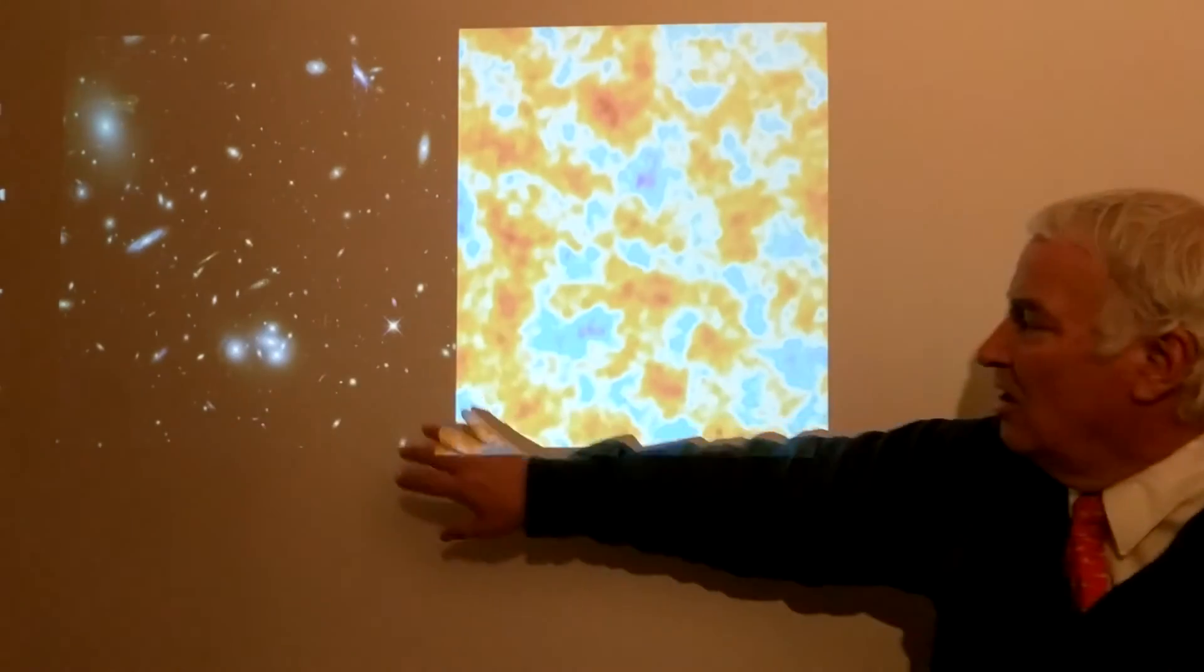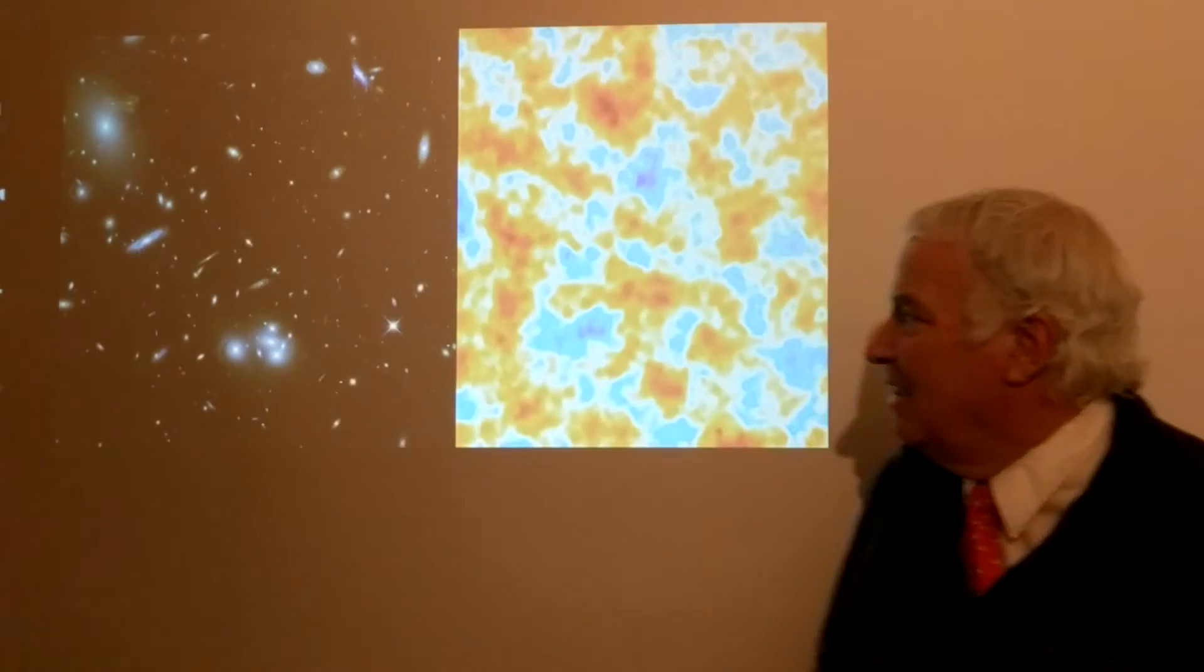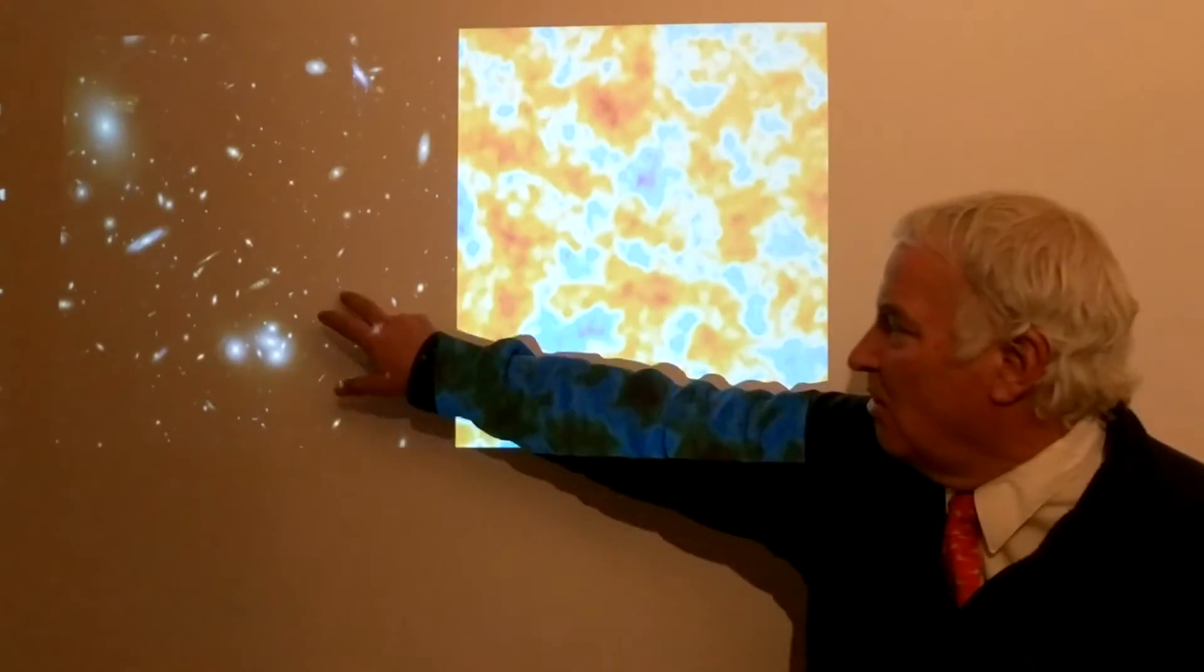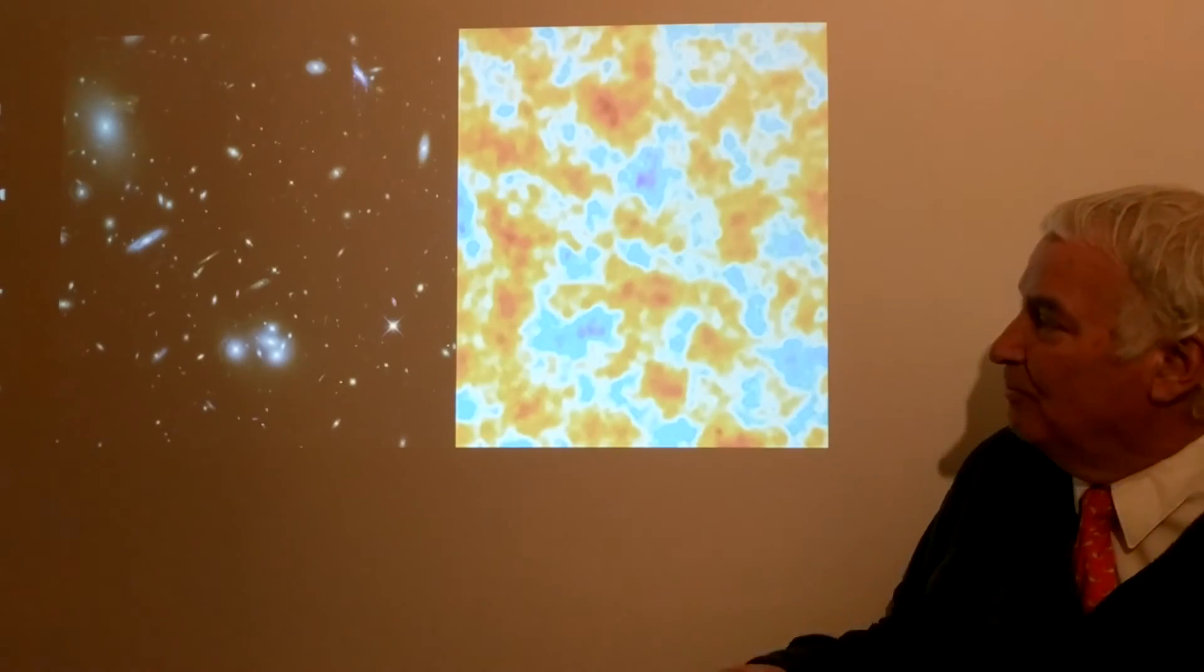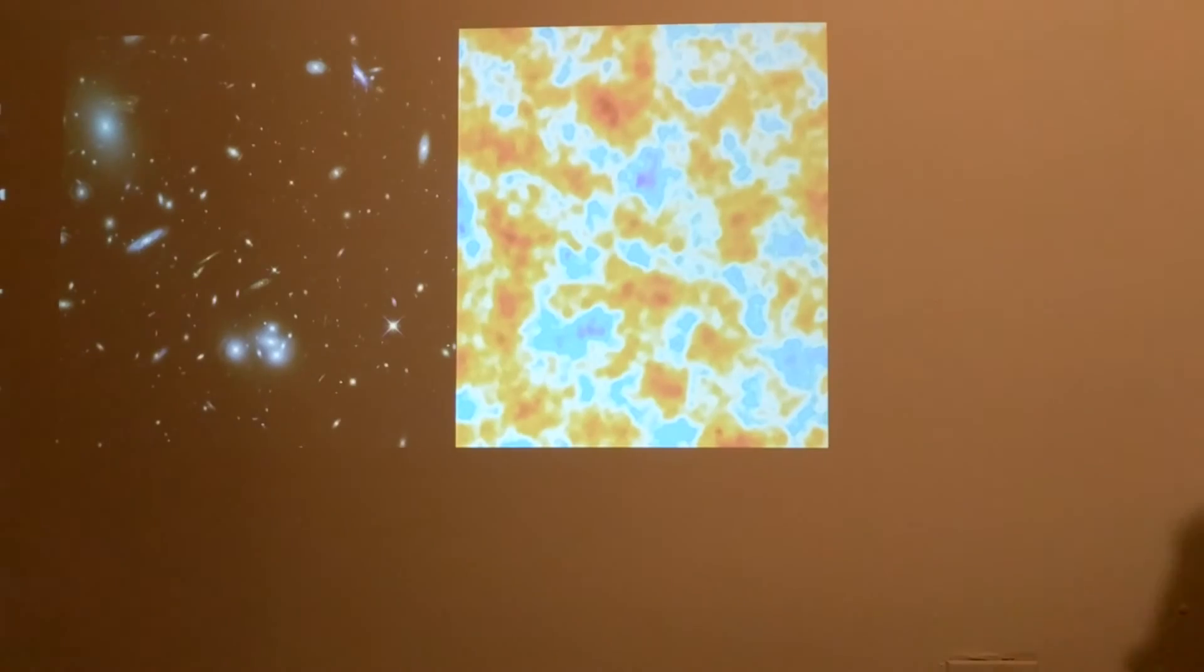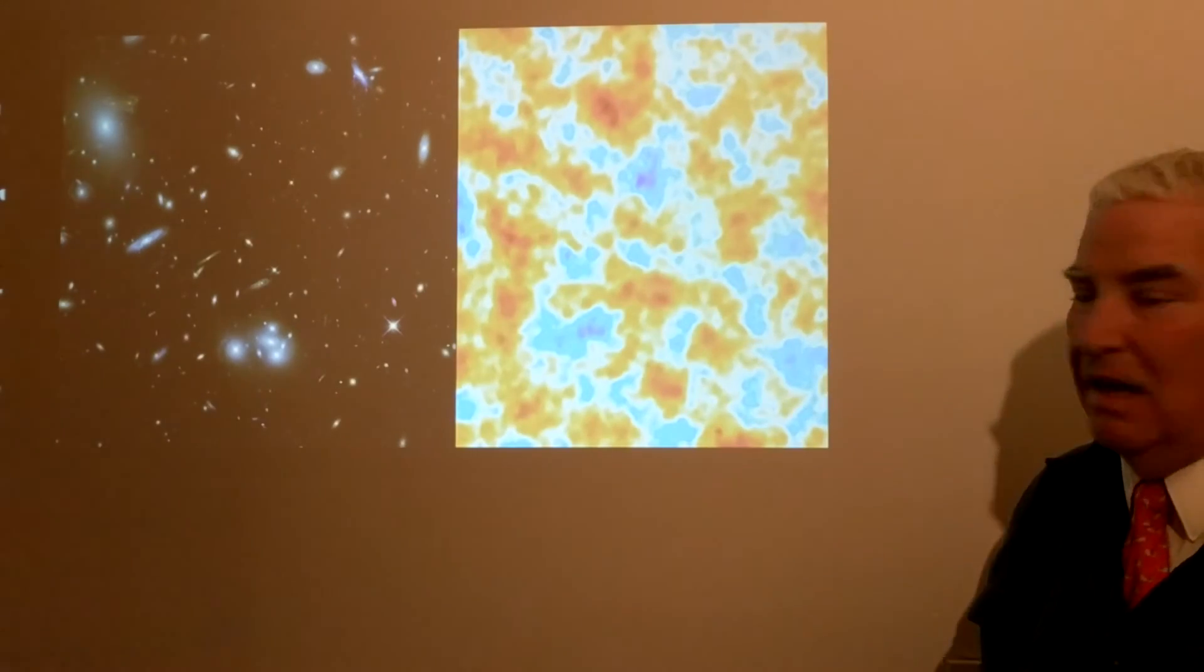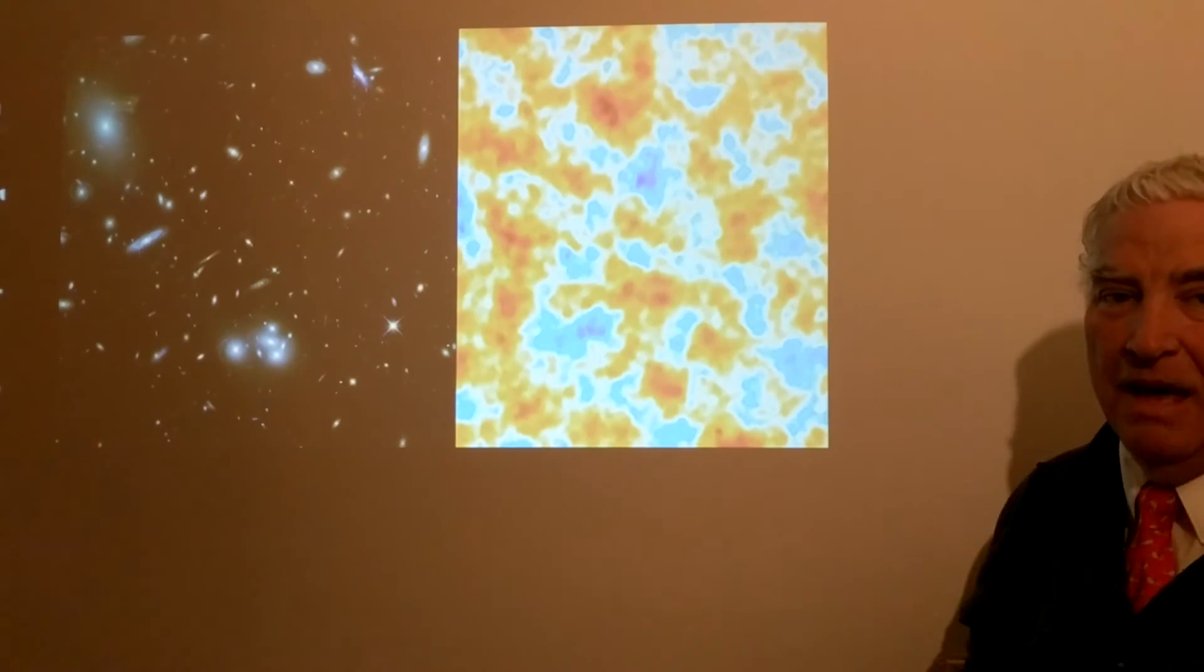As we look further out into space, we look back into time. Many of these galaxies—this is the way they were billions of years ago. The farther they are, the smaller they look, and the further back in time we're looking at them. We can see galaxies forming and much of the history of the universe in this picture. Here we have a snapshot at 300,000 years after the Big Bang—the expansion of the universe and the hot Big Bang.